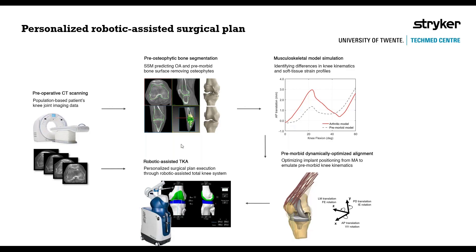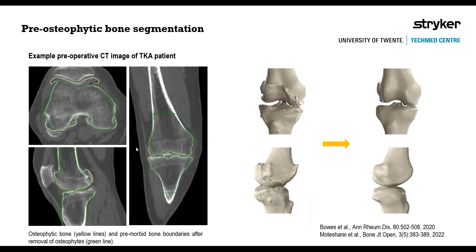We start the process with a preoperative CT scan of the patient's knee. We then perform image segmentation using a statistical shape model trained to identify the arthritic bone surface including osteophytes—which are typically visible along the peripheral edges of the knee joint—and also trained to identify features of the subchondral bone below the osteophytes and distinguish between osteophyte and native bone. In this way, we can generate the pre-morbid bone geometry.